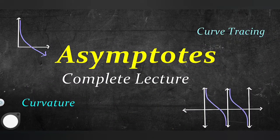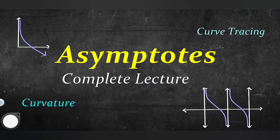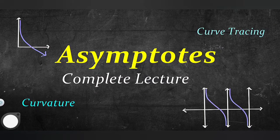Welcome back everyone. Today we have the concept of asymptote. In this lecture I will try to cover the complete aspect of asymptote, because it is the most important topic of calculus. All the curve tracing, curvature, and quadrature depend on asymptotes. Let's start — what is the asymptote, how we can draw asymptotes, and how it is useful to trace a curve.